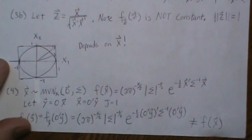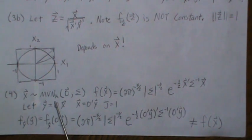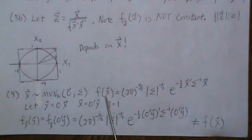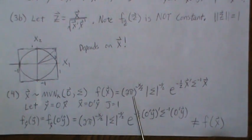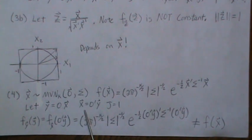All right, so now one more example that is not rotationally independent. If we let x be a multivariate normal, mean zero, and some variance covariance matrix, then the density of x is this. It's multivariate normal. Let's let this be a rotation, back solve for x, Jacobian's 1.